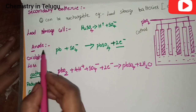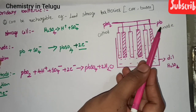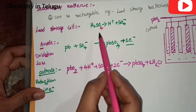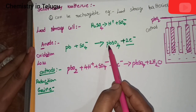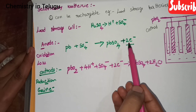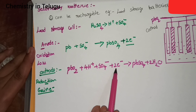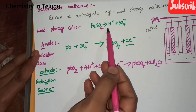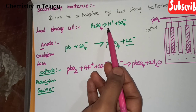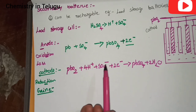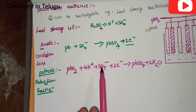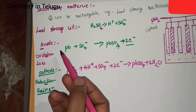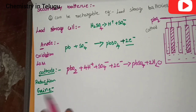To summarize: at the anode, lead in dilute H₂SO₄ solution forms lead sulfate and loses two electrons. Those two electrons pass to the cathode. At the cathode, lead oxide with dilute H₂SO₄ solution and 4H⁺ ions plus SO₄²⁻ gains two electrons, forming lead sulfate and water.